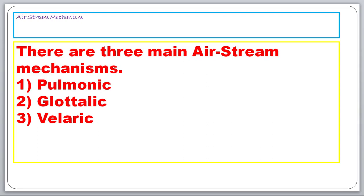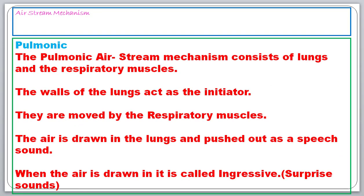What are the three airstream mechanisms? Pulmonic, glottolic, and velic. In simple terms: pulmonic is related to the lungs, glottolic is related to the vocal cord, and velic is related to the tongue. Three systems and three mechanisms.